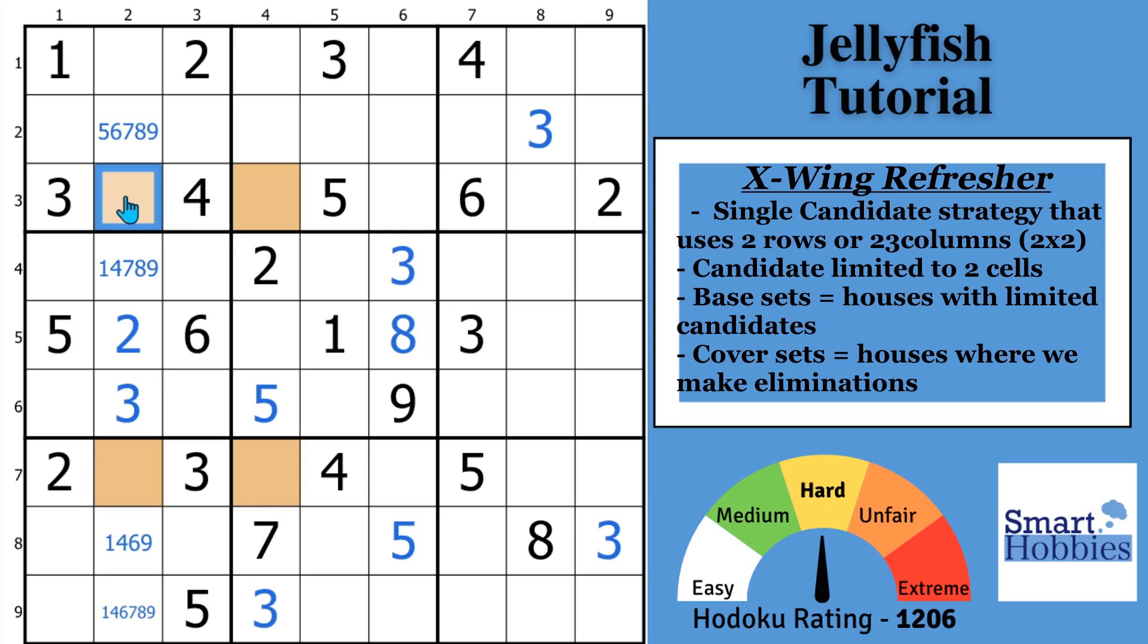And so you can easily figure out that 8 has to be either here and here or there and there to satisfy the conditions of the X-Wing and for the puzzle. And what you'd be able to do is eliminate every other 8 along column 2 and column 4. Now, let's remove this 8 and remove our colors.